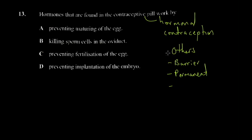There's also the natural or rhythm method, where a woman studies her own menstrual cycle to identify when it's reasonably safe to have unprotected sex without a high risk of pregnancy. Birth control pills work by thickening the mucus of the cervix — that tubular passage for sperm — so that sperm cannot enter.